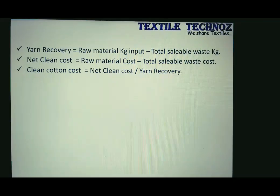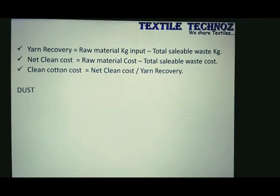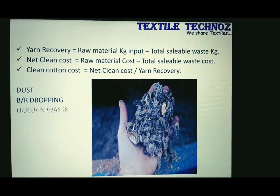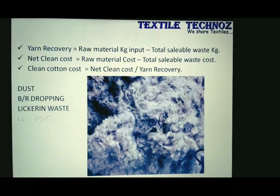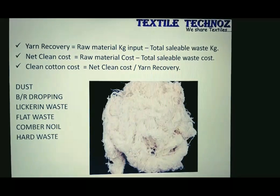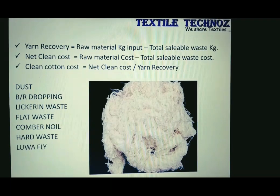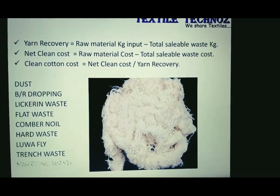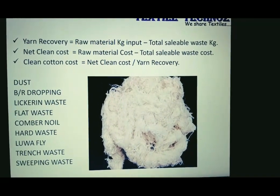Here is a list of sellable waste types: dust, blowroom droppings, liquor-in waste, flat waste, combed noil, hard waste, luva, fly, trench waste, and sweeping waste. Get ready with your computer and prepare an Excel sheet the same as the one shown here.